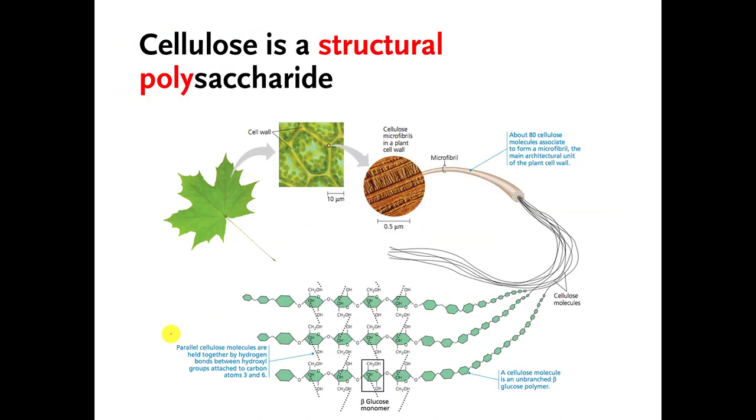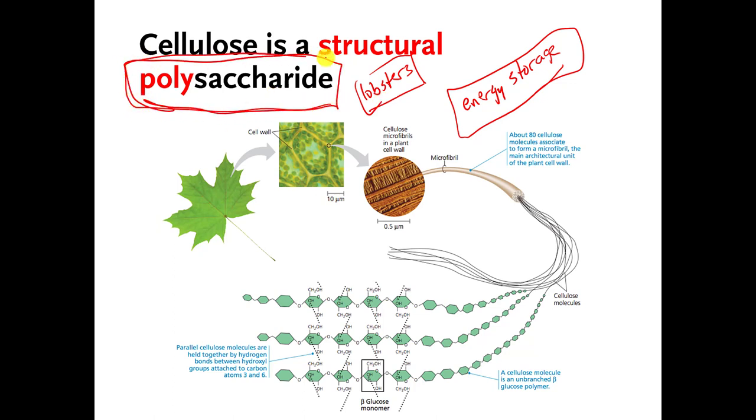And one other thing that I should point out, I said that polysaccharides are often used for energy storage. That's one of the uses. Sometimes polysaccharides can be used to give a hard structure to living things. So for example, you're probably familiar with lobsters and crabs. The shells of lobsters and crabs are made from a special type of polysaccharide that is very tough.